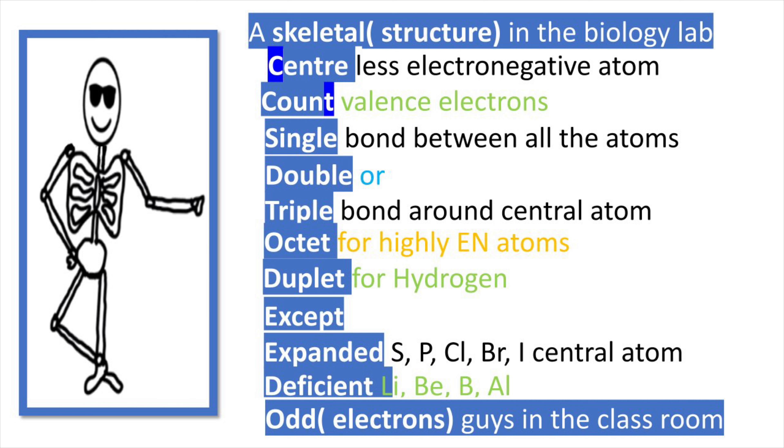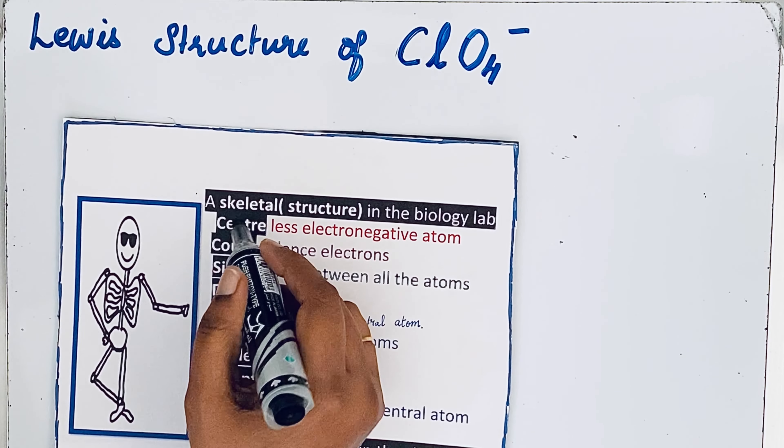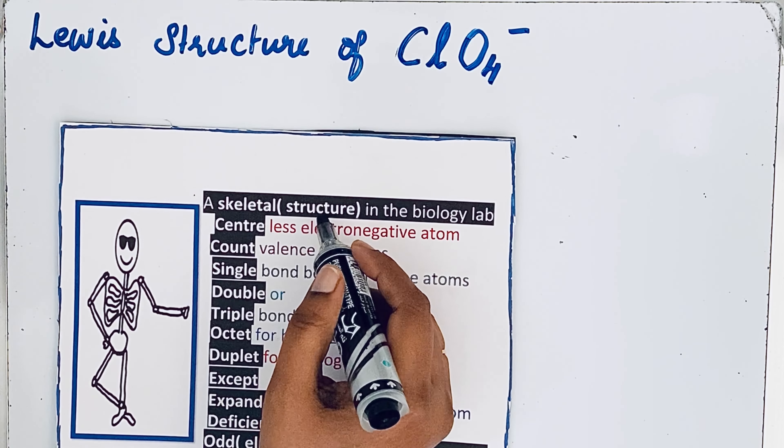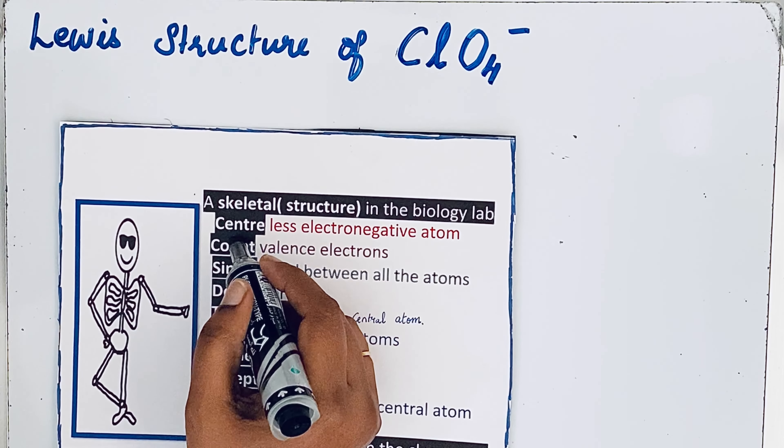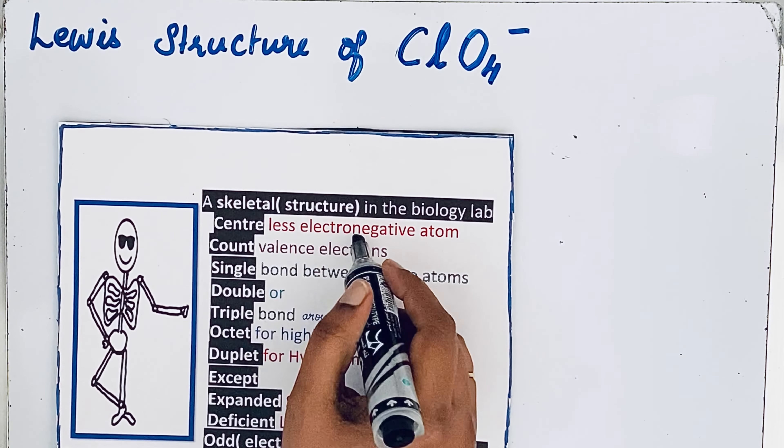A skeletal in the biology lab, center, count, single, double, triple, octet, duplet, except expanded, deficient, odd guys in the classroom. Look at the first step, a skeletal structure. In the second step, when you draw the skeletal structure, the center should be the less electronegative atom.